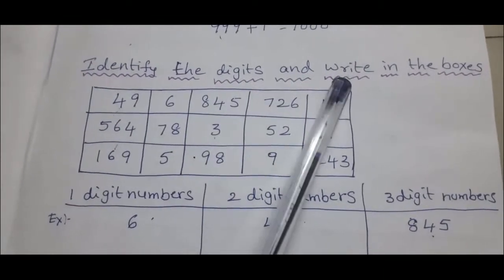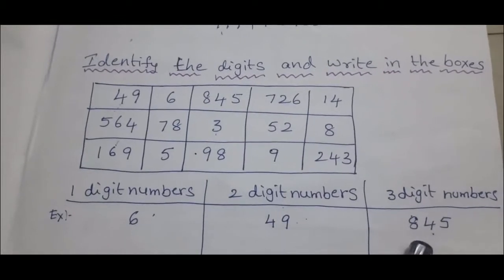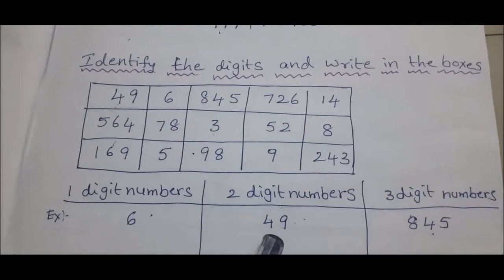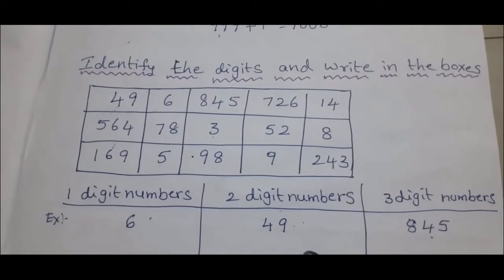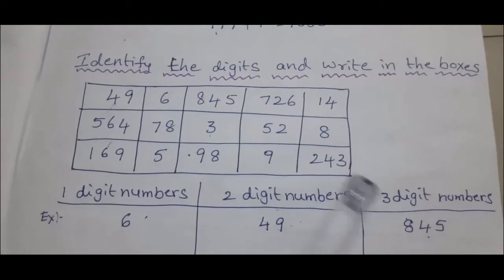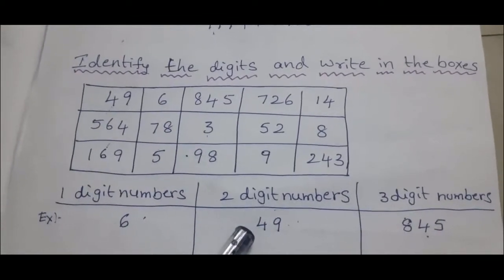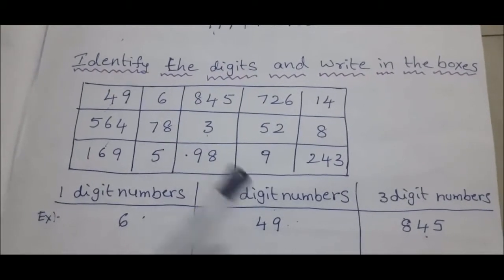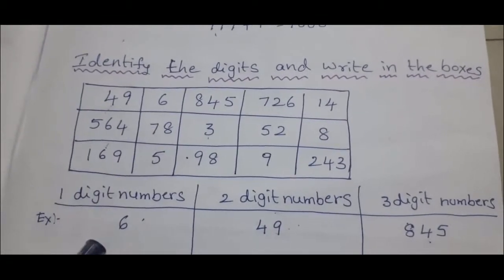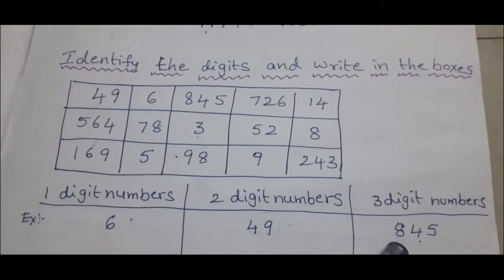Identify the digits and write in the boxes. 1-digit numbers: 1 to 9. 2-digit numbers: 10 to 99. 3-digit numbers: 100 to 999. First number 49 — this is a 2-digit number, we write 49 under 2-digit numbers. Next number 6 — this is a 1-digit number, we write under 1-digit numbers. Next number 845 — this is a 3-digit number, we write under 3-digit numbers.